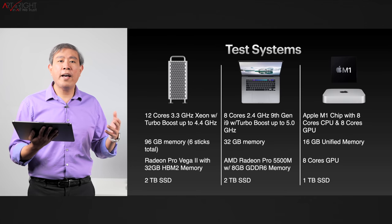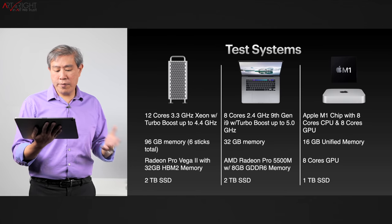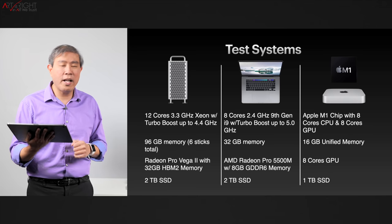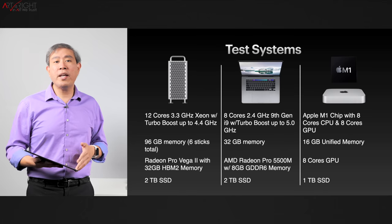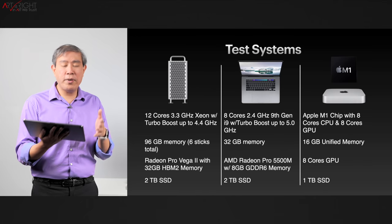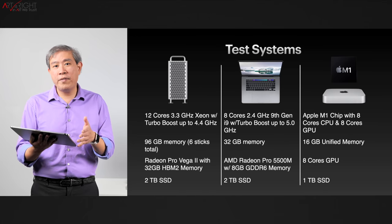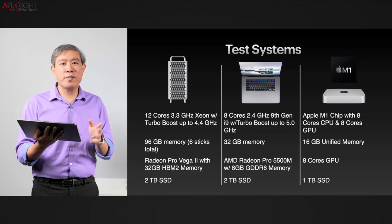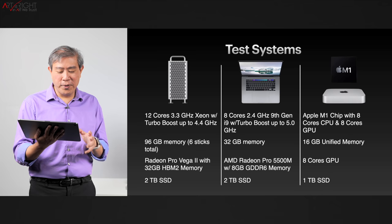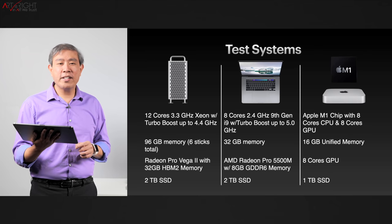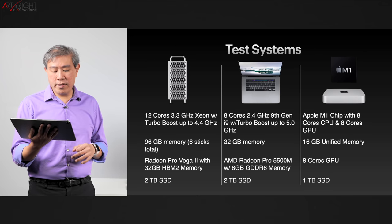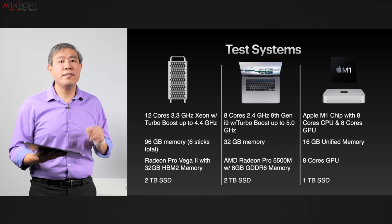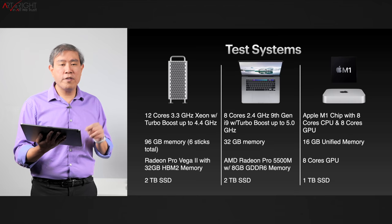I also have my 16-inch MacBook Pro from 2019, 8 cores at 2.4 GHz — that's the top of the line — with 32 gigabytes of memory and an AMD Radeon Pro 5500M with 8 gigabytes of GDDR6 memory. And with the Apple Silicon M1, this is the upgraded system with 8 GPU and CPU cores and 16 gigabytes of unified memory.